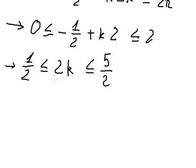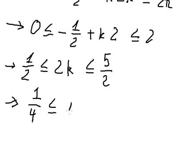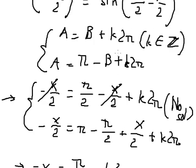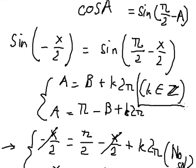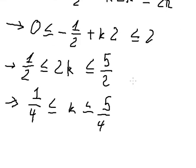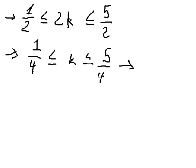Next we need to divide both sides by number 2. And we have 1 over 4, K, and 5 over 4 here. Because K should be an integer, that means K equals to number 1. So we just have only one value here.